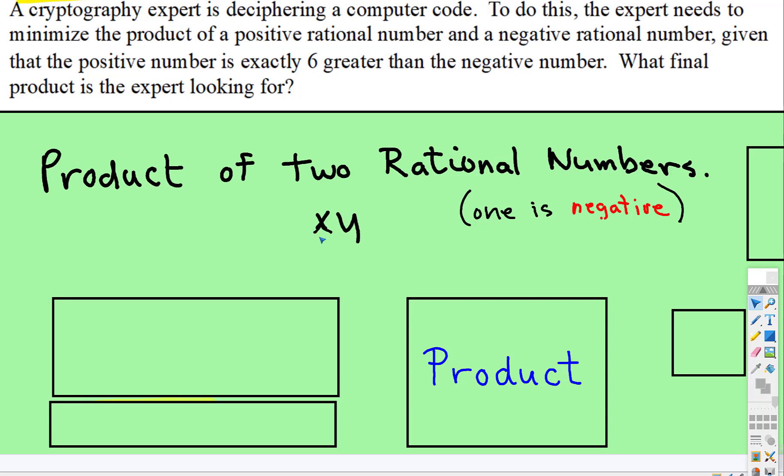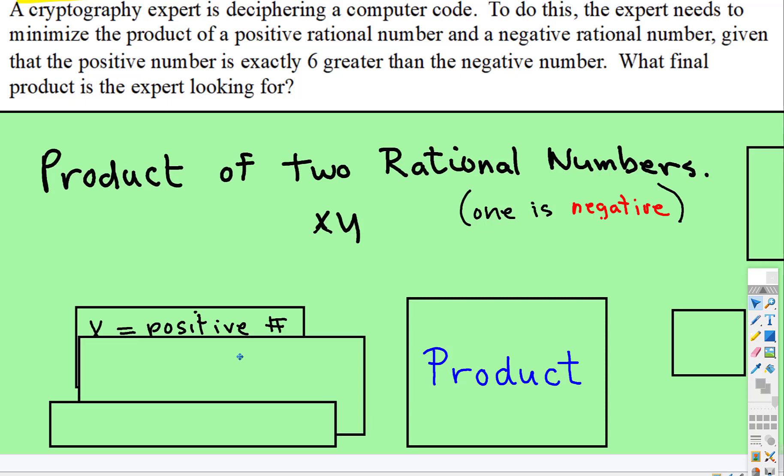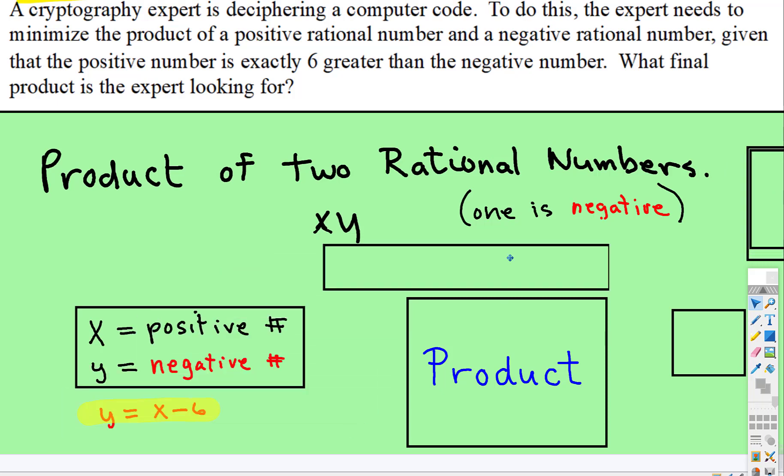So I'm going to let x be positive and y be negative. So if we say that x is positive and x is six greater, then y, we can say, oh well, y then is six less than x, right?